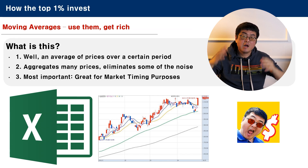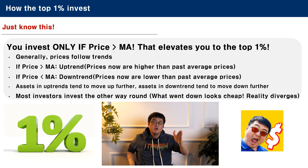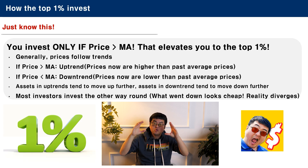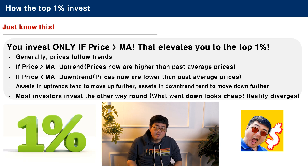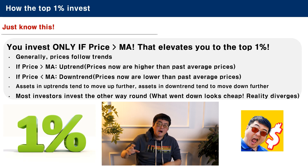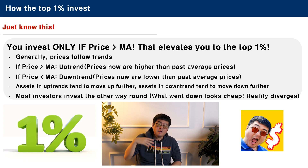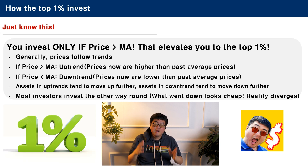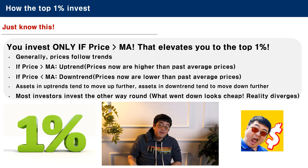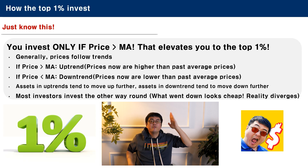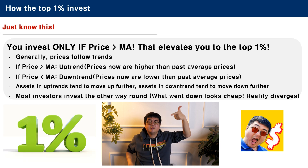So you can see that the moving average eliminates a lot of noise, and it is most important for market timing. You just have to know this: invest only if the price is above the moving average. If you do that, it elevates you to the top 1% of investors. Generally, prices follow trends. If the price is above the moving average, it means there has been an uptrend, because prices now are higher than past average prices. And if the price is below the moving average, it means the stock is in a downtrend. Generally, in most assets, assets in an uptrend tend to move up further, and assets in a downtrend tend to move down further.